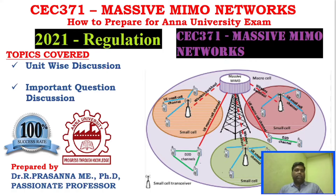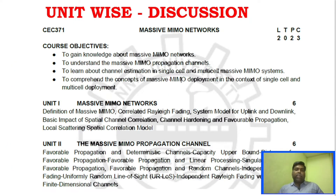We don't have previous year question papers for this particular subject since it was a new subject in the 2021 regulation. Because the syllabus is very vast, we will eliminate a lot of topics. Unit 1 is Massive MIMO Networks — very simple. We will start with the system model for uplink and downlink, and similarly the basic impact of spatial channel correlation and local scattering spatial correlation model.